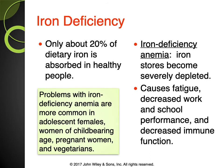Only about 20% of dietary iron is absorbed in healthy people. Iron deficiency anemia is more common in adolescent females, women of childbearing age, pregnant women, and vegetarians who may have cut out key iron sources. Iron deficiency anemia occurs when iron stores become severely depleted and causes fatigue, decreased work and school performance, and decreased immune function.